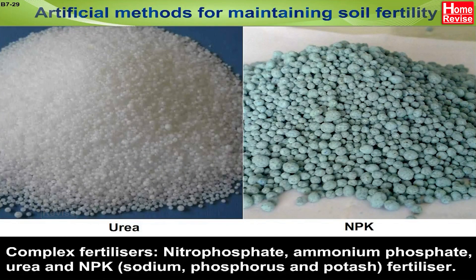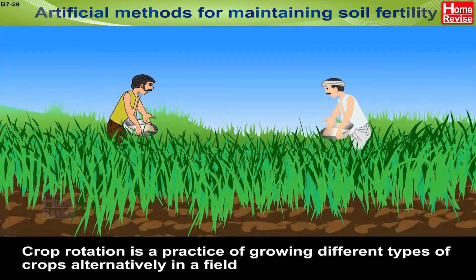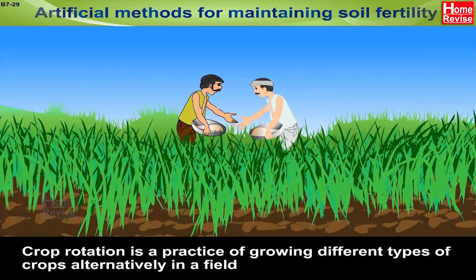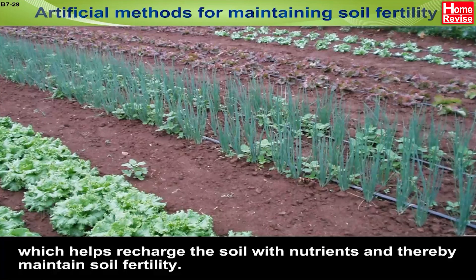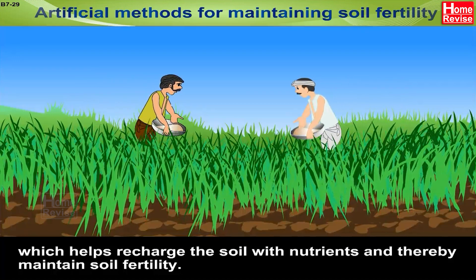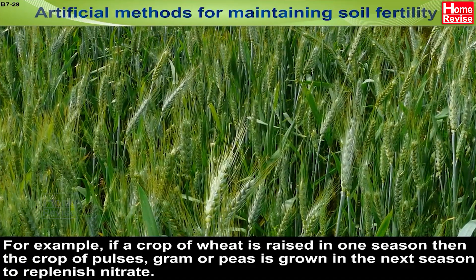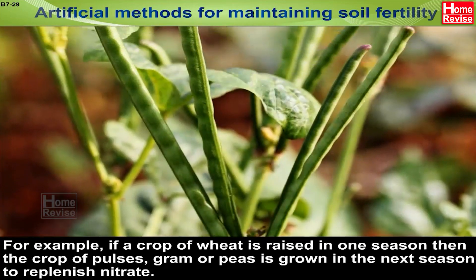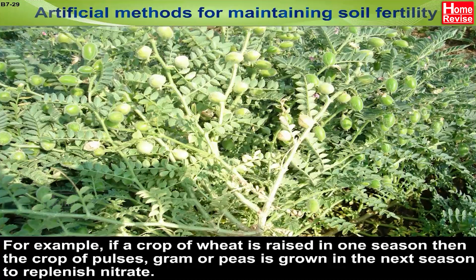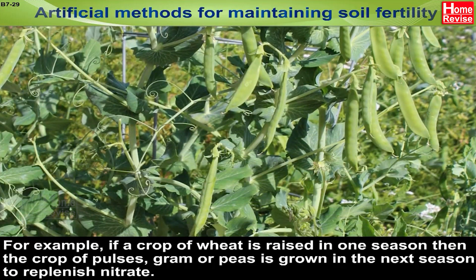NPK — that is nitrogen, phosphorus and potash fertilizer — is also a complex fertilizer. Crop rotation is the practice of growing different types of crops in a field, which helps recharge the soil with nutrients and thereby maintain soil fertility. For example, if a crop of wheat is raised in one season, then a crop of pulses such as gram or peas is grown in the next season to replenish nitrates.